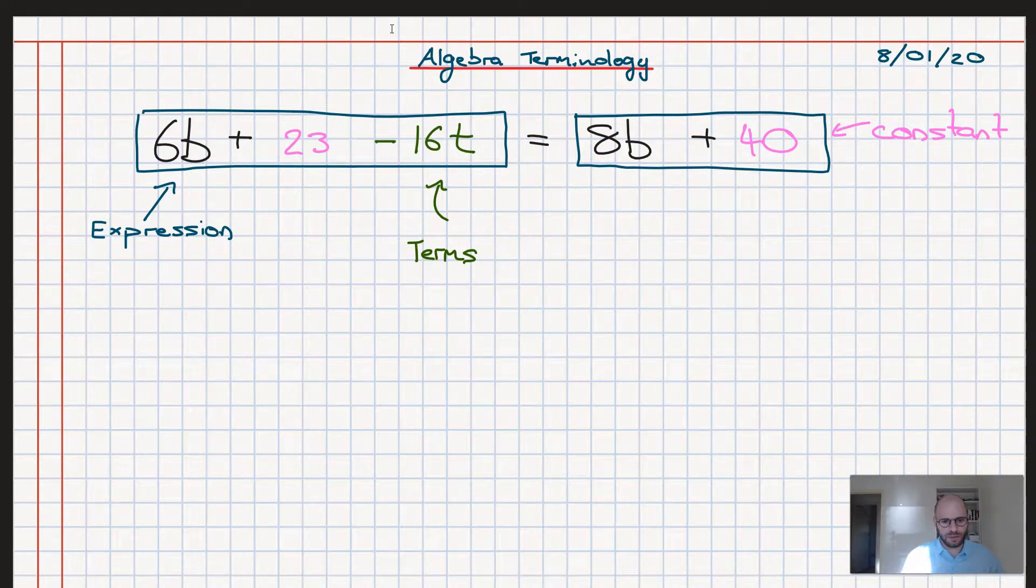The other sort of term we deal with is where there's a number and a letter grouped together. So the one where the number and the letter grouped together, we call the number the coefficient. So in this case, the number eight is our coefficient. And similarly, the letter itself, we have a name for that too. We call the letter the variable.